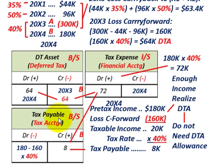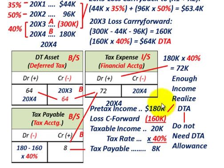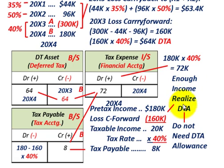We need to determine our tax payable — the current amount — and how we use up our deferred tax asset. For 20x4: pre-tax income of $180,000 less the loss carry forward of $160,000 gives us taxable income of $20,000. Times the 40% tax rate, that gives us a tax payable of $8,000. We can see that our $180,000 of income is enough to realize the total deferred tax asset, since $180,000 is greater than the $160,000 loss carry forward. So we won't need the deferred tax allowance account because we were able to realize it all in 20x4.